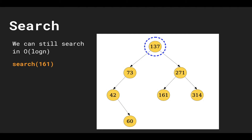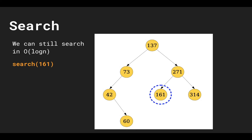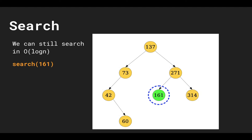Let's say we want to search for 161. We start at the root and check if 161 equals 137 — it does not. We now need to recurse into the left or right subtree. Since 161 is greater than 137, it can't be in the left subtree, so we move to the right child. We check if 271 equals 161 — it doesn't. Since 161 is less than 271 we go left. Finally, the node we land on equals 161, so we return true. At each step we cut the search space in half.